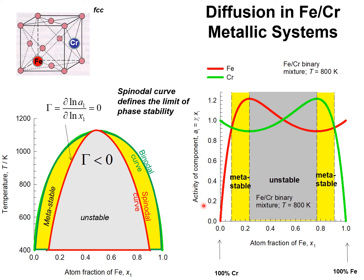In this graph, the activity of each of the components, iron and chromium, are plotted against the atom fraction of iron. It is interesting to note that for iron, the activity gradient of iron is opposite in sign to the atom fraction gradient of iron.